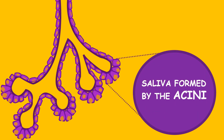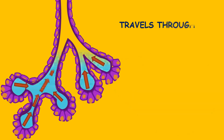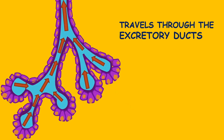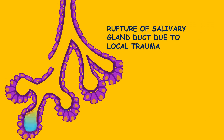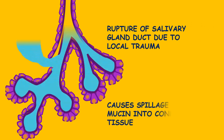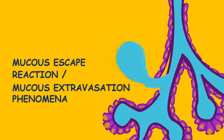Normally, the saliva formed by the minor salivary glands travels through the excretory ducts. However, in the case of trauma to the ducts, there is spillage of mucin into the surrounding connective tissue. This is known as mucus escape reaction or mucus extravasation phenomena.